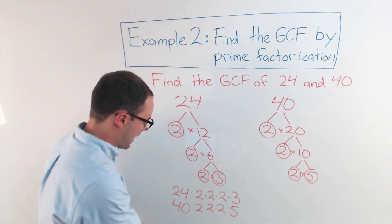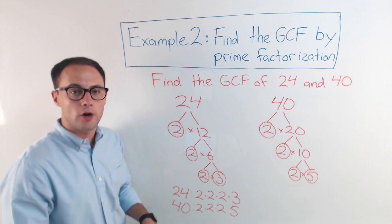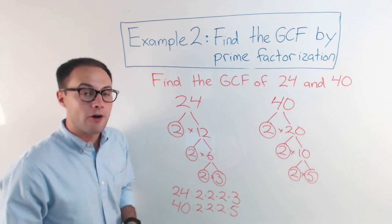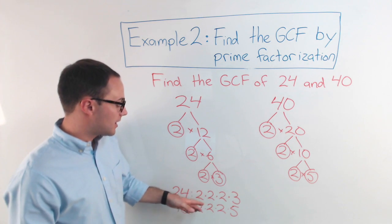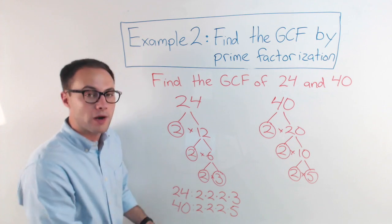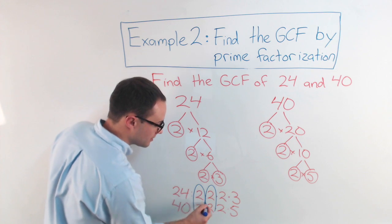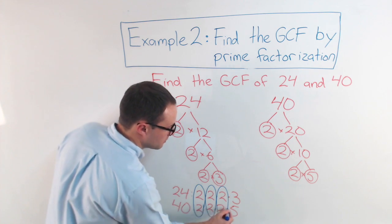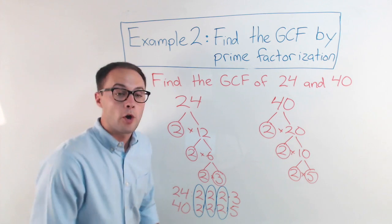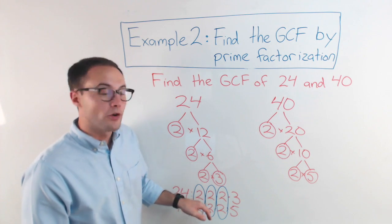So I have my prime factorization of 24 and 40 done. Now all I need to look at is see what prime numbers are in common for both of the prime factorizations. So you can see they both have a 2, they both have another 2, and they both have a third 2. So all we have to do to find the GCF now is multiply.